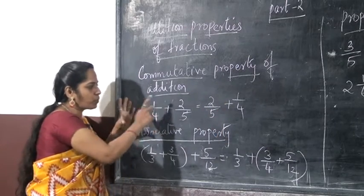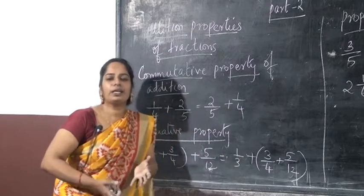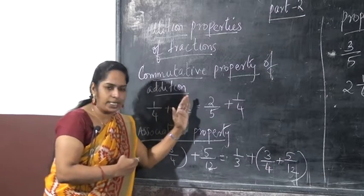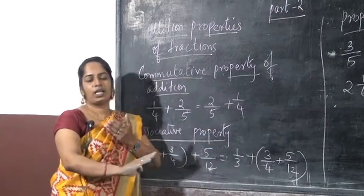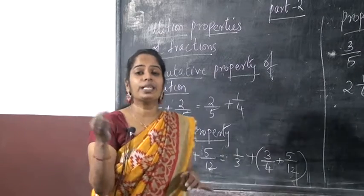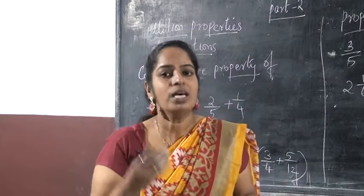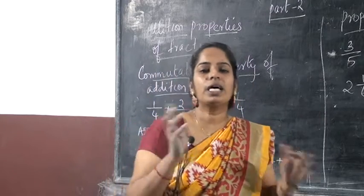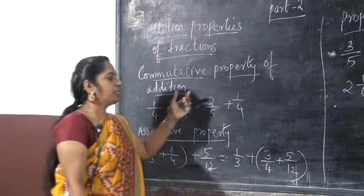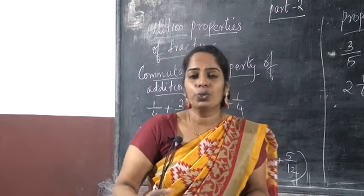What is the addition here? 1/4 is to add. The commutative property says that 2 plus 3 is the same as 3 plus 2. That is what the commutative property means. If you are using the commutative property, do this question.